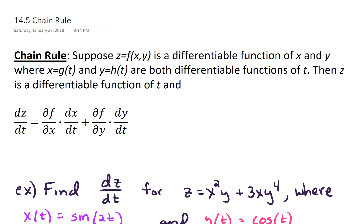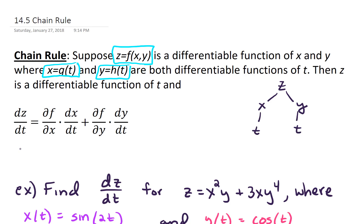I'd like to give you an idea of how you can remember this formula. If you begin with z at the top of the paper, z is a function of x and y — that's given to us right here in the problem. We're also given that x equals g of t and y equals h of t; in other words, x and y are functions of t. And we're interested in finding dz/dt — the derivative of z with respect to t.